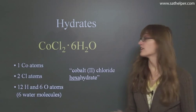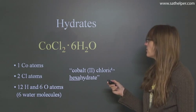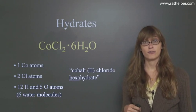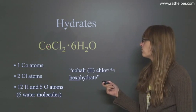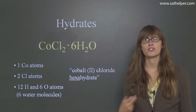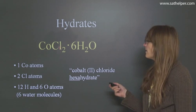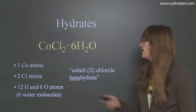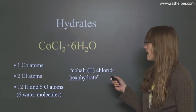Here's an example of a hydrate. We have CoCl2 with 6H2O. So how many atoms do we have with each element here? First, with cobalt, we have 1 because there's no subscript, so we assume that there's just 1. Then we have a 2 by the Cl, so we know we have 2 Cl atoms.